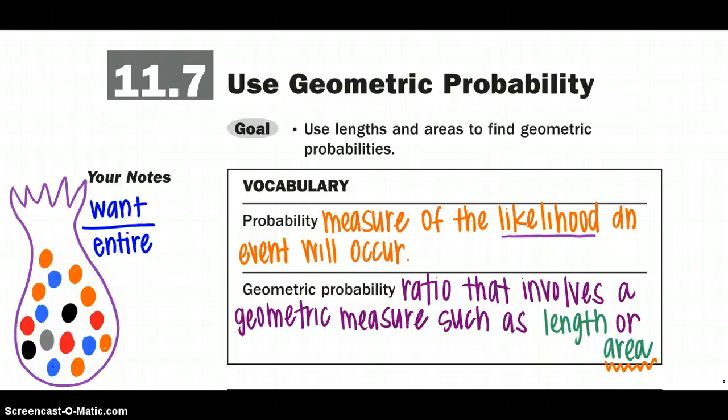And we are going to transition into the Geometric Probability, which is the ratio that involves a geometric measure, such as length or area. And we are actually going to use both today.